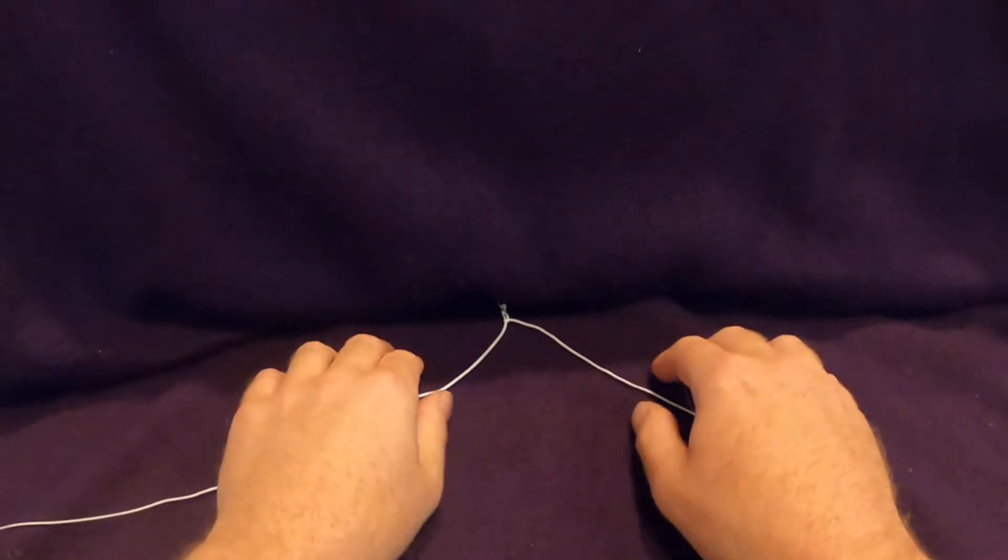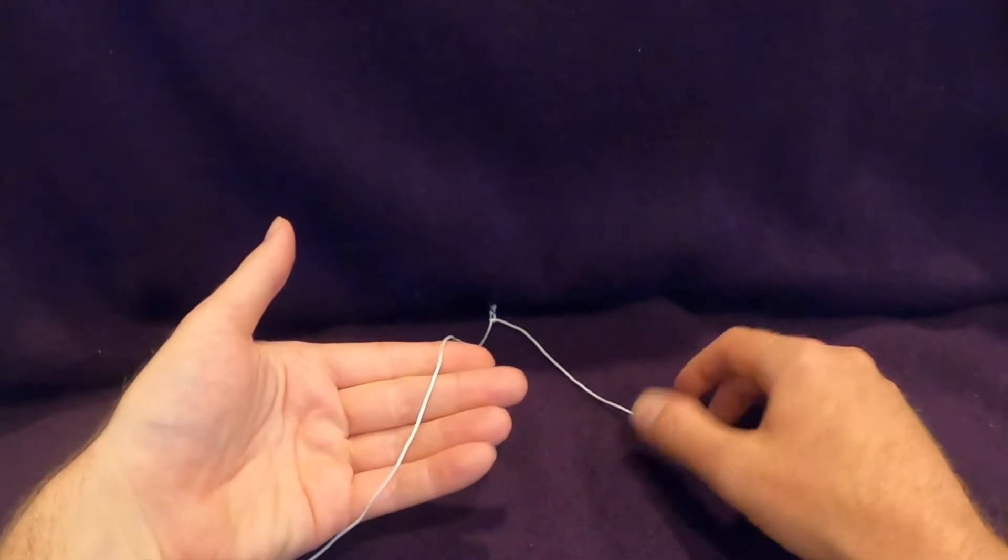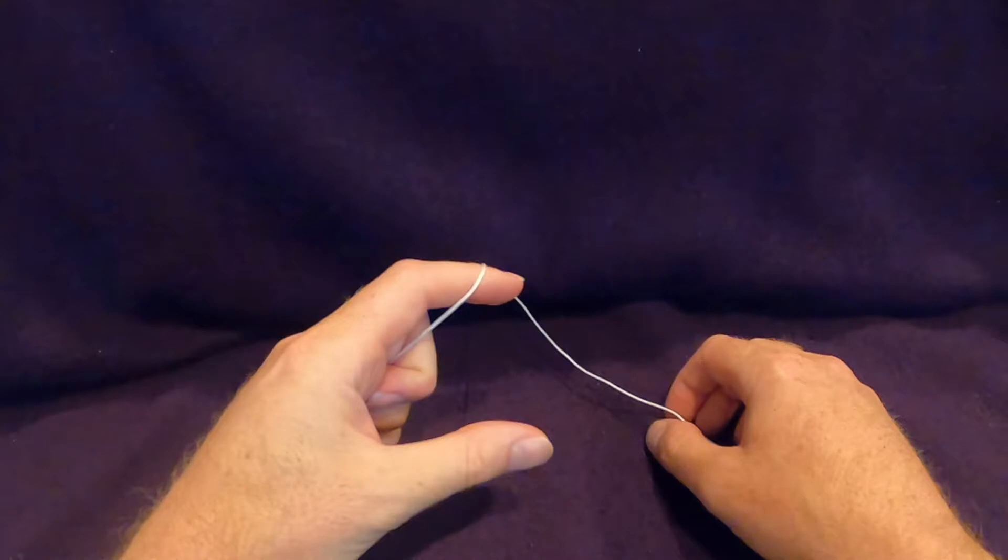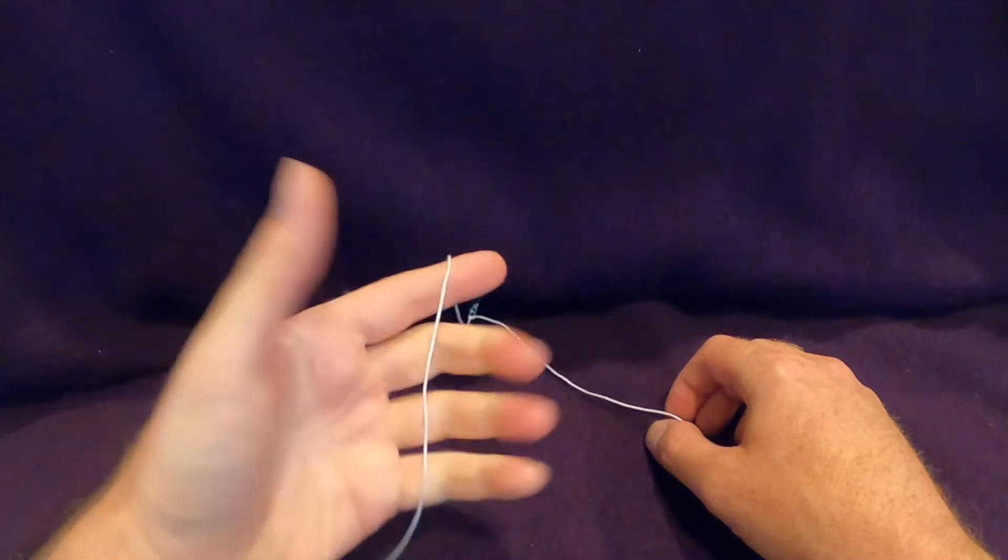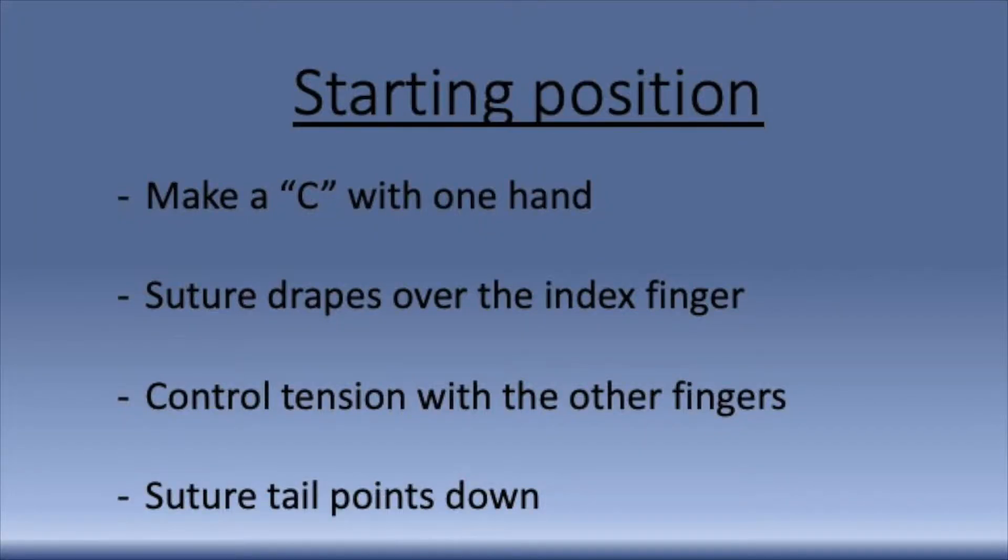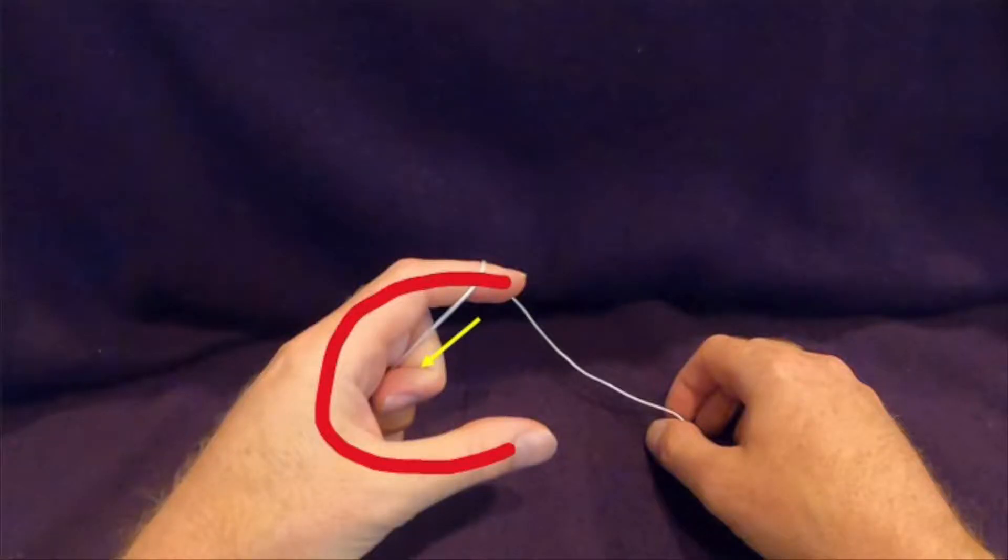When starting a two-hand knot, the suture tail drapes across the palm and the tail should point towards the person tying the knot. The bottom three fingers will control tension on the suture and the suture will drape across the index finger. The overall position of the hand that's being used to tie the knot should be in the shape of the letter C.